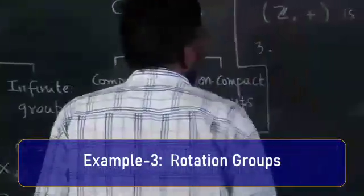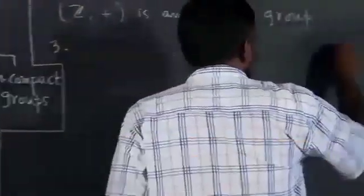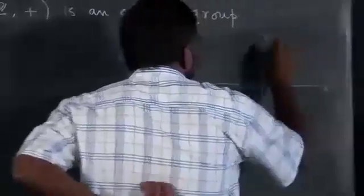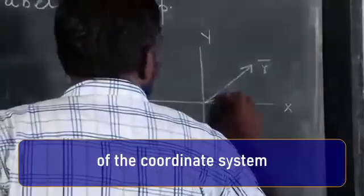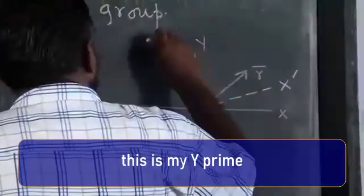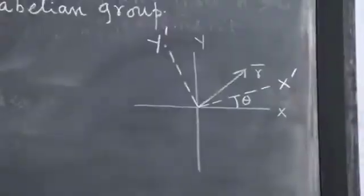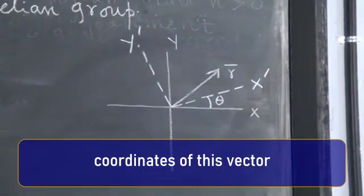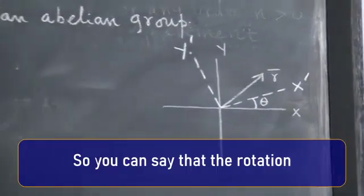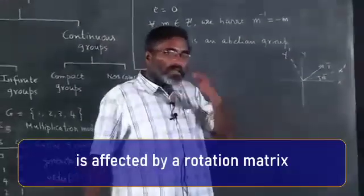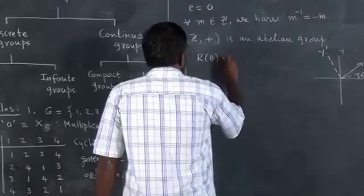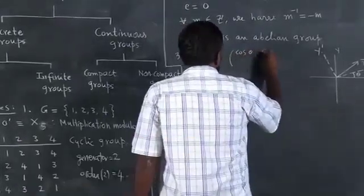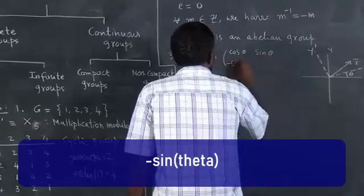Take another example: I have an x-y plane and a vector denoted as r. I make a rotation of the coordinate system — this is my x-prime, this is my y-prime — by an angle theta, and ask what will happen to the coordinates of this vector in the new frame. The rotation is affected by a rotation matrix R(θ), which equals [cos θ, sin θ; −sin θ, cos θ].